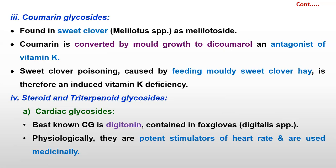Next to coumarin are steroid and triterpenoid glycosides. The example is cardiac glycosides. The best-known cardiac glycoside is digitonin, and its source is foxgloves. Physiologically, they are potent stimulators of heart rate and are used medicinally. This glycoside has medicinal use.